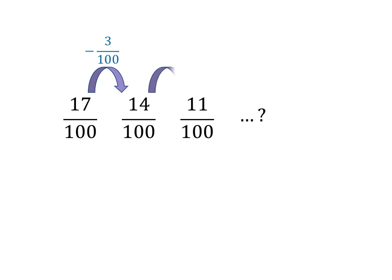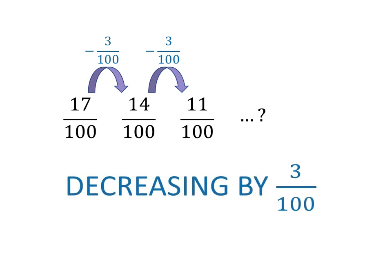To go from 14 over 100 to 11 over 100, we also need to subtract 3 over 100. So the pattern description is that the numbers are decreasing by 3 over 100.